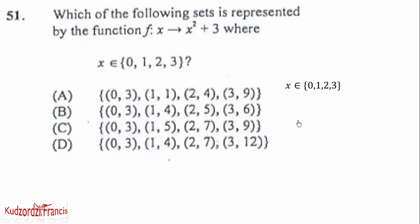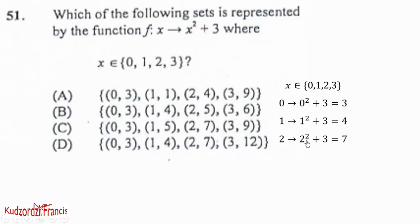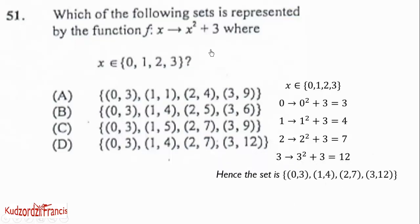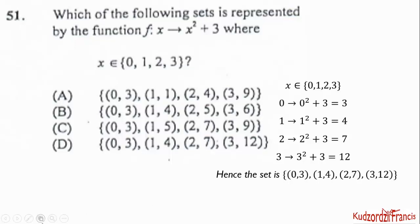We'll find the range now. When x equals 0: 0 squared plus 3 gives us 3. When x equals 1: 1 squared plus 3 gives 4. When x equals 2: 2 squared plus 3 gives 7. When x equals 3: 3 squared plus 3 gives 12. So the set represented by the function is {(0,3), (1,4), (2,7), (3,12)}, and the correct answer is option 4.